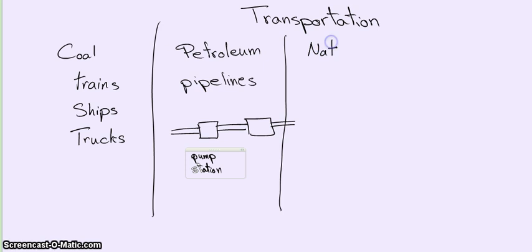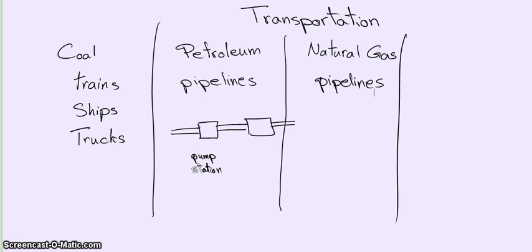Same for natural gas. Natural gas can be transported by pipes. And here we also have compressor stations that are similar to the pumping station that ensure the natural gas is under sufficient pressure to move around 15 miles per hour.